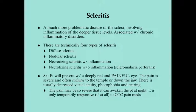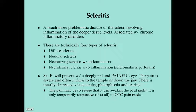Scleritis is a much more problematic disease of the sclera involving inflammation of much deeper tissue than the episclera, and it's associated with chronic inflammatory disorders. Scleritis can be divided into four types. We'll focus on diffuse scleritis and nodular scleritis, as the other two types are more complex and diagnosed by ophthalmologists — and have not appeared on USMLE in practice.